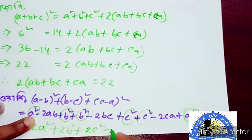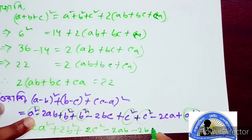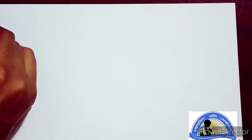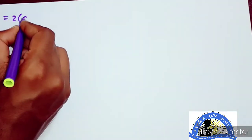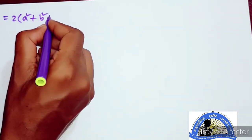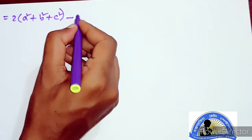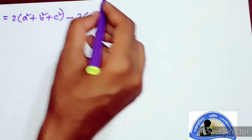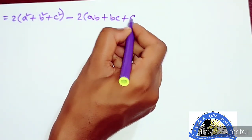Above the rest is minus 2ab minus 2ab minus 2bc minus 2bc minus 2ca. So we have two common factors here: a squared plus b squared plus c squared minus 2 into ab plus bc plus ca.